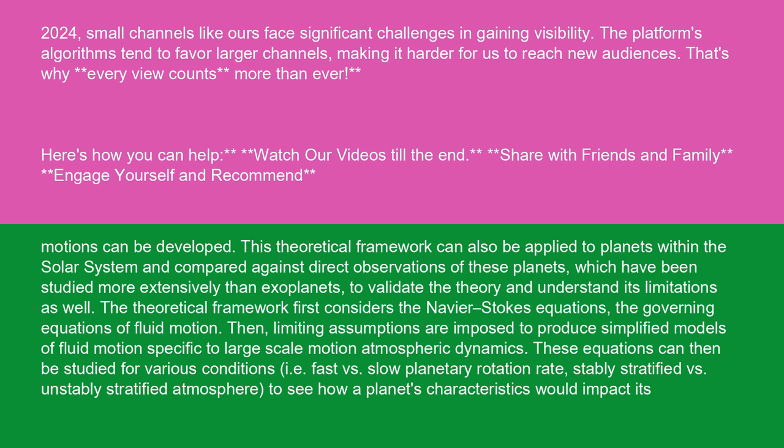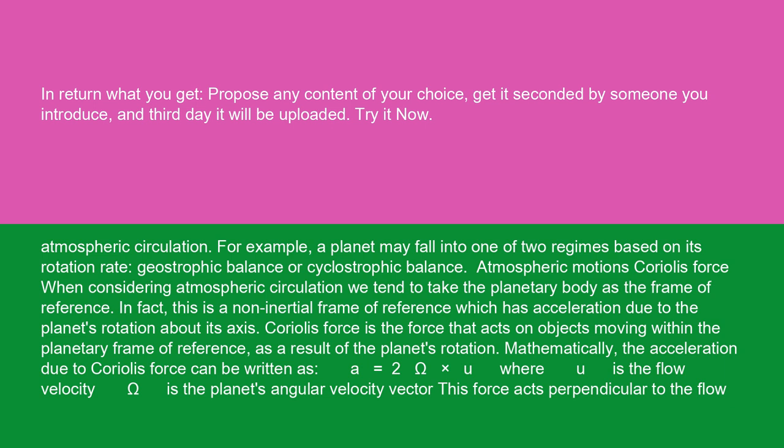These equations can then be studied for various conditions, i.e. fast versus slow planetary rotation rate, stably stratified versus unstably stratified atmosphere, to see how a planet's characteristics would impact its atmospheric circulation. For example, a planet may fall into one of two regimes based on its rotation rate: geostrophic balance or cyclostrophic balance.